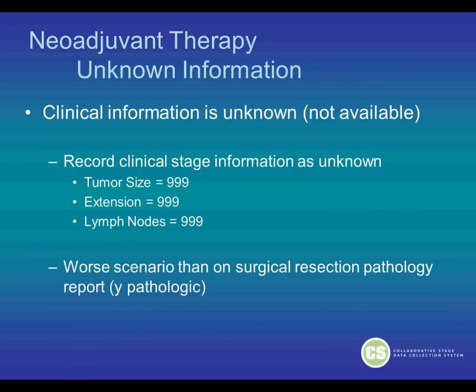If you have unknown staging information — if the clinical information is unknown or not available in your medical record — then for this scenario you should record the clinical stage information as unknown: tumor size 999, extension 999, and lymph nodes 999. You should not record information just because you know it. For partial or complete response, the proper information to record the worst scenario is the clinical stage.